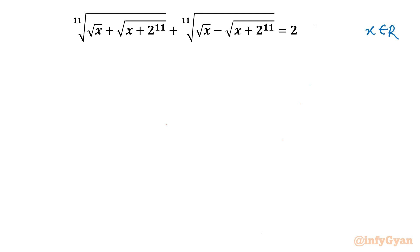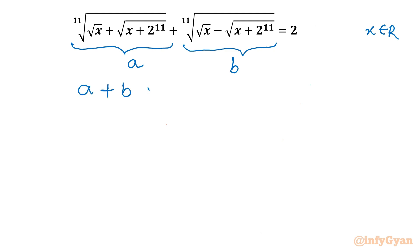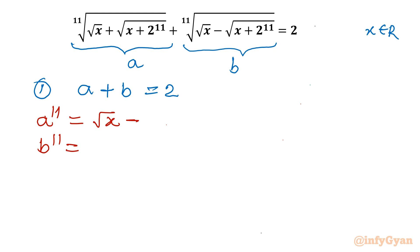Let us begin with substitution. The first radical term I will consider a, and similarly the second radical I will consider b. So this equation becomes a + b = 2. This is our very first equation. Now I will write equations from substitution. So I can write a^11 and b^11 from our substitution: a^11 will be (√x + √(x+2))^11.